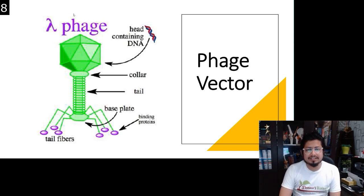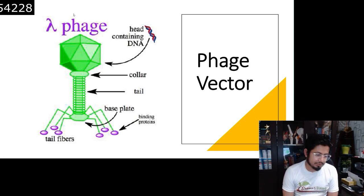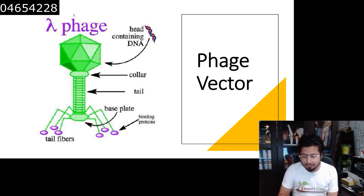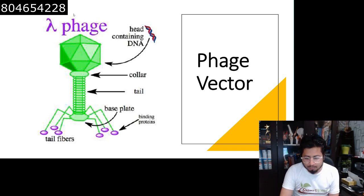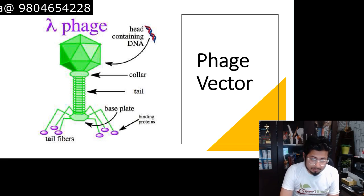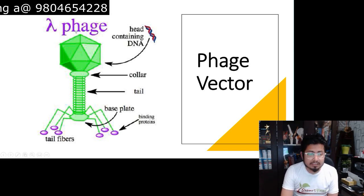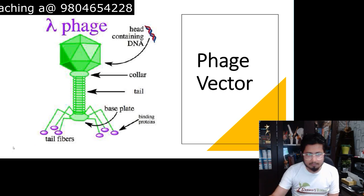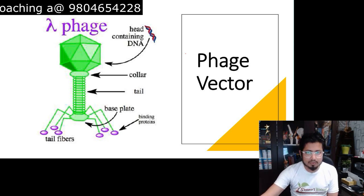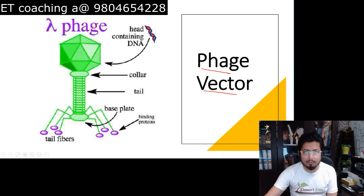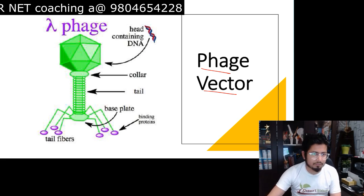It's time to talk about the phage vector. We've been talking about different kinds of cloning vectors used for molecular cloning, and one such vector — the phage vector, basically the bacteriophage virus — is used as a vector for the molecular cloning process. What is this phage vector, what do we mean by molecular cloning, and how do we use the phage vector for molecular cloning?